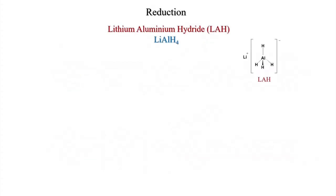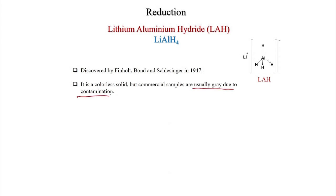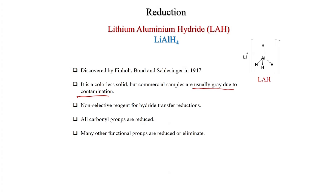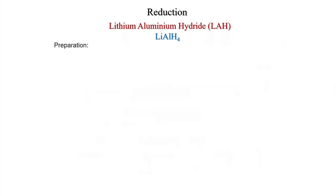Now we discuss lithium aluminum hydride (LiAlH4) reduction. The structure is Li+ AlH4−, with four hydrides. It was discovered by Finholt, Bond and Schlesinger in 1947. It is a colorless solid, though commercial samples are usually gray due to contamination. It is a non-selective reagent that reduces nearly all carbonyl groups and many other functional groups. Protic solvents cannot be used; reactions are performed in ether solvents at low temperature.